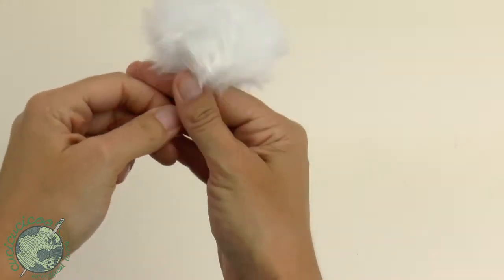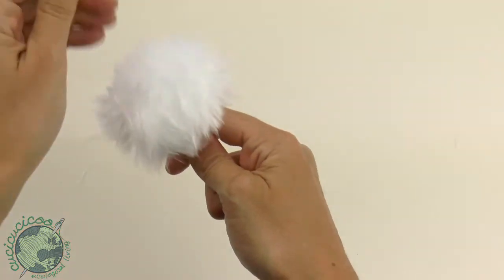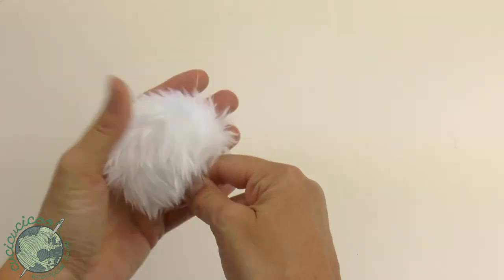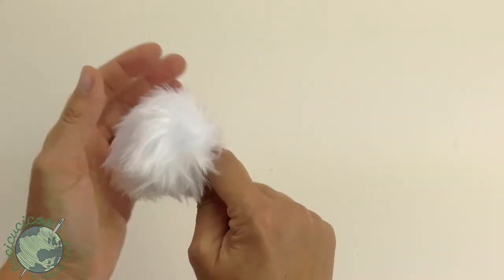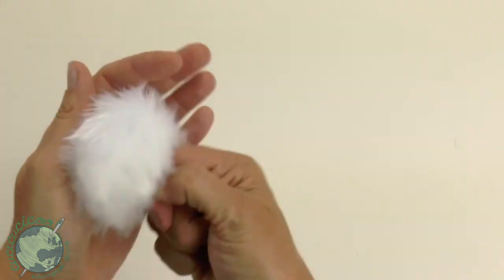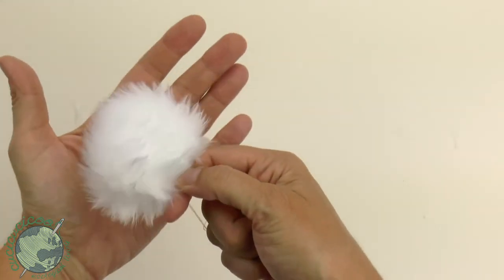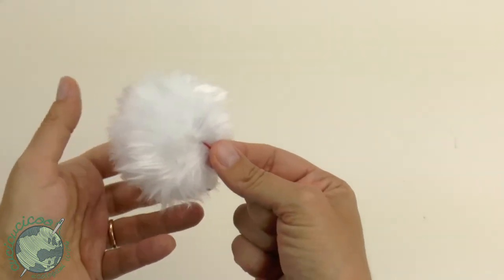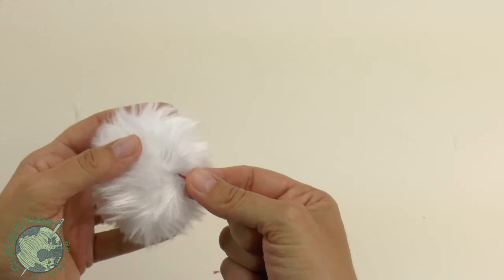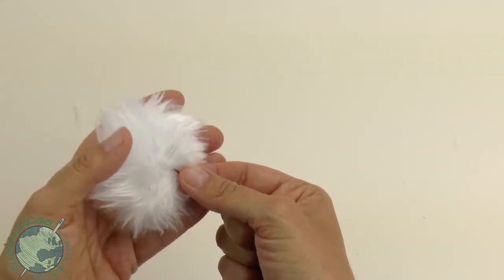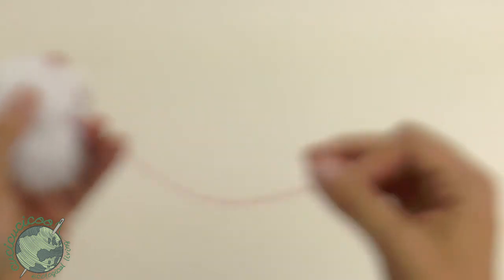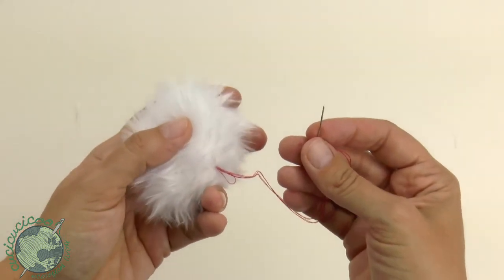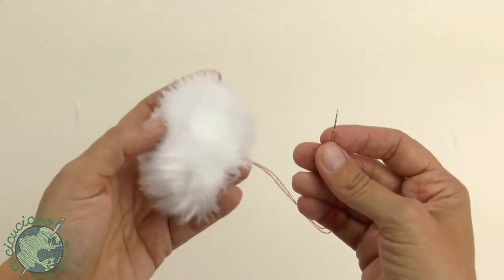All right and there we have our nice fur pom pom. If you want, if you have fabric fur that is very furry with a long nap you can actually use a comb and brush it. I like to just kind of shake mine out a little bit and it looks nice and fluffy like that. Now at this point you can either cut your thread or you can use it and sew it onto your project whatever it is. So in this case I have my needle and I'm just going to sew it onto the end of a Santa hat which I will show you in my next tutorial. See you then.